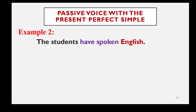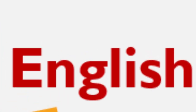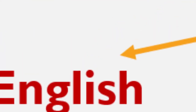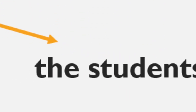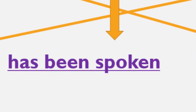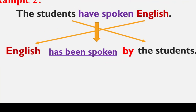Example number two: The students have spoken English. English becomes the subject and the students become the object. The answer is: English has been spoken by the students. English is singular so we use has. Remember that been is placed between have/has and the past participle, and don't forget by before the agent.